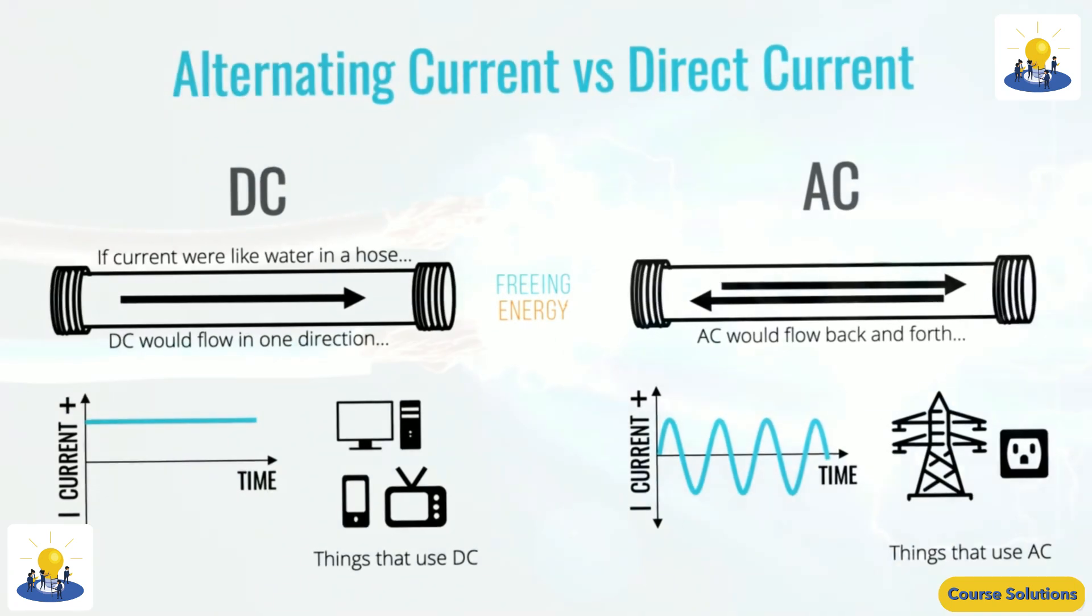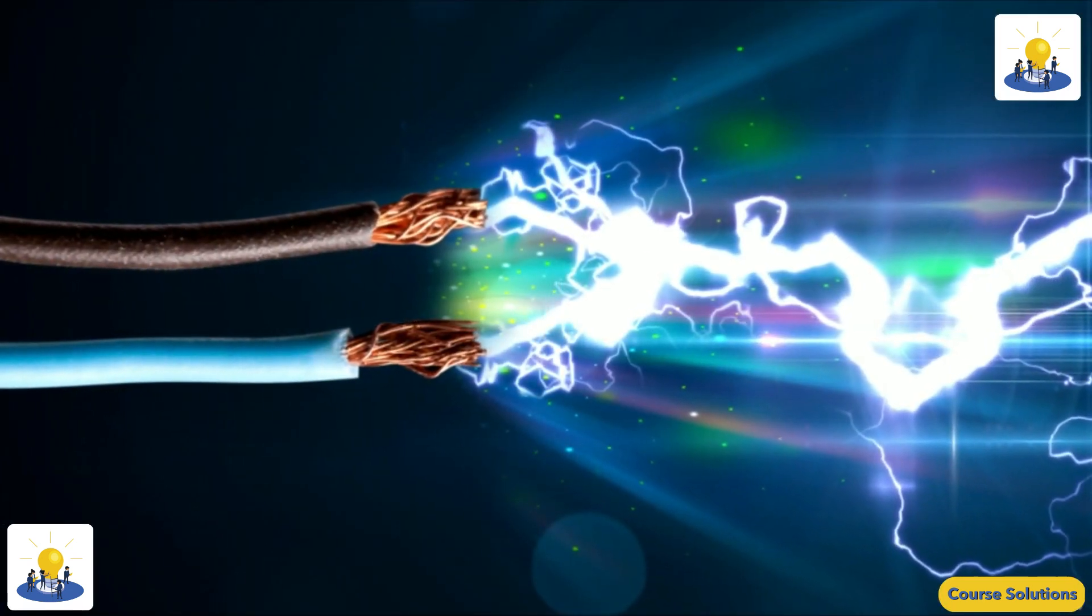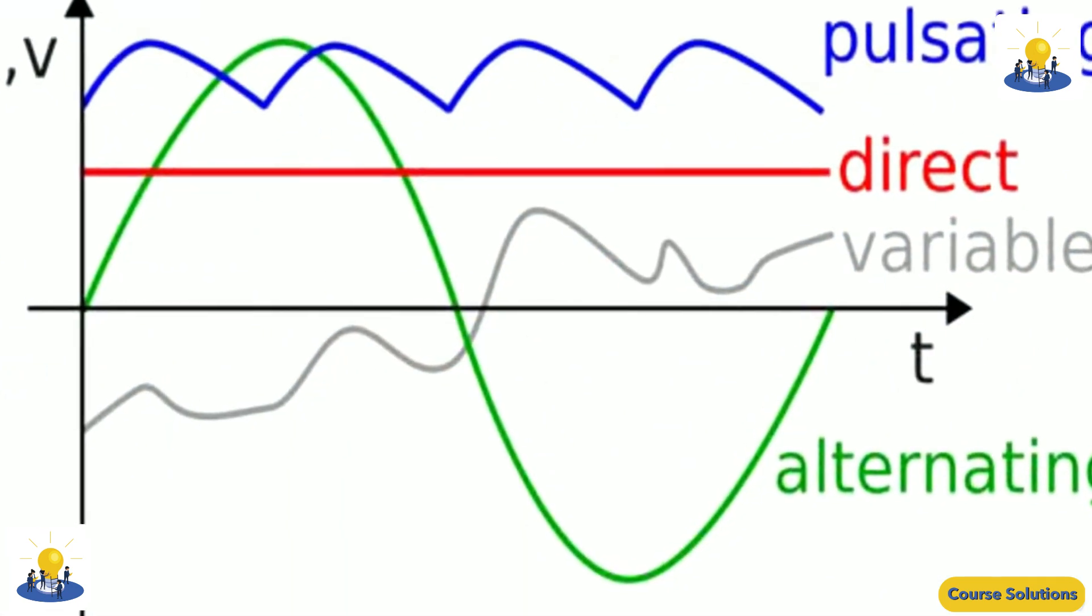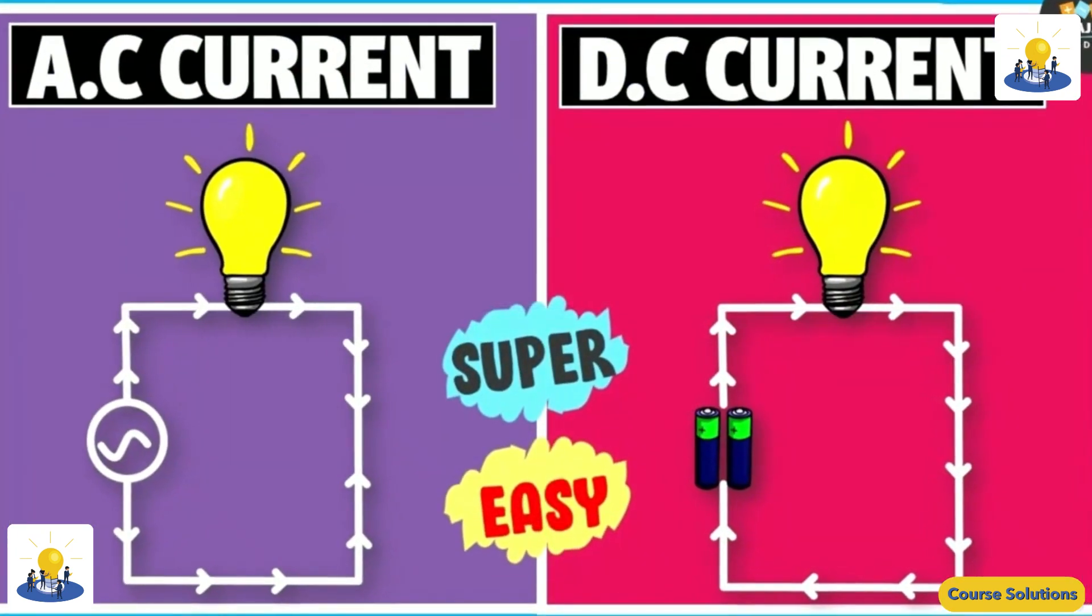The electric current flows in a constant direction, distinguishing it from alternating current (AC). A term formerly used for this type of current was galvanic current.